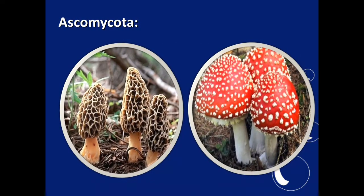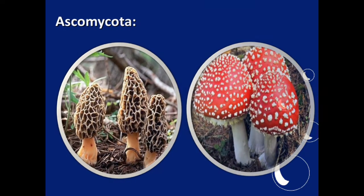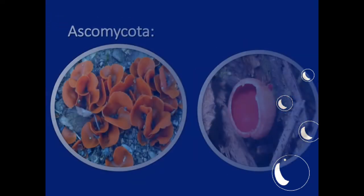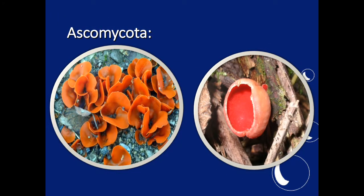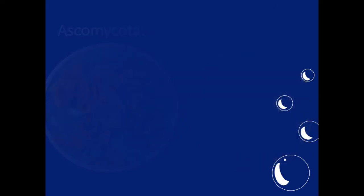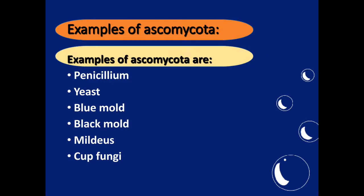You can see here the structure of Ascomycota, including some mushrooms. Ascomycota structures are just like a cup shape. Examples of Ascomycota are Penicillium, yeast, blue mold, black mold, mildew, and cup fungi.